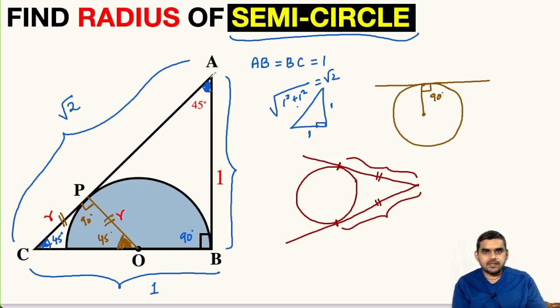So likewise, if we see here, point A is the external point, AB is a tangent and AP is also a tangent, P and B are the points of contact. So AB will be equal to AP. So what will be the measure of length AP? AP will also be one unit.